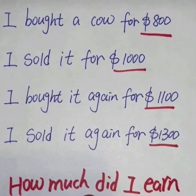Simply put: you started out with $800 in your pocket and now you have $1,300. The difference between $1,300 and $800 is $500. But because you borrowed $100 from someone, you return that $100, so you have $400 for yourself. It's as simple as that. There's always a simple way to look at life, but many of us choose to look at things the complicated way.